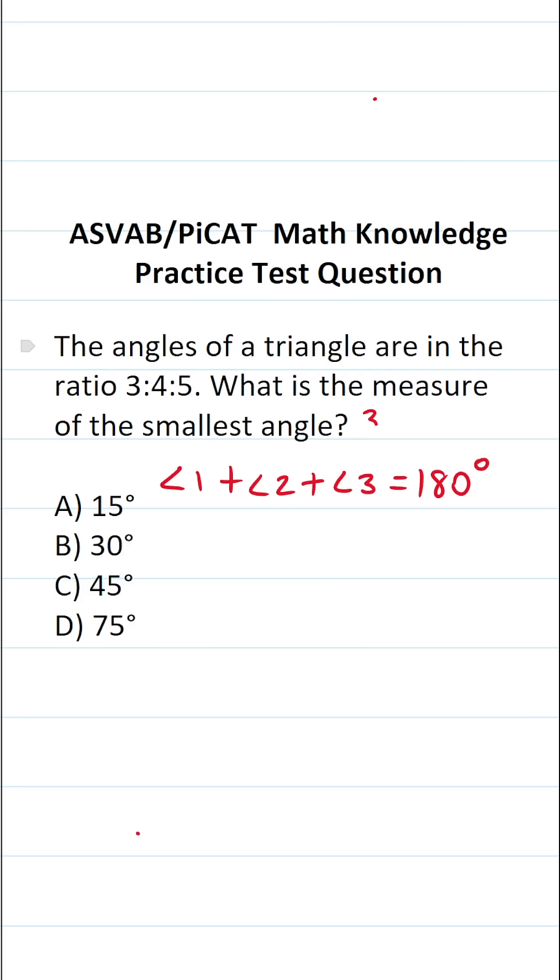That said, according to this problem, we know these angles are in the ratio of 3 to 4 to 5. The question is, how can we represent this algebraically? Well, first I want to point out that all the measures of these angles are unknown. So I can actually say this is going to be 3x plus 4x plus 5x equals 180. So the measure of angle 1 is 3x, the measure of angle 2 is going to be 4x, and the measure of angle 3 is going to be 5x. This keeps the ratio of 3 to 4 to 5.